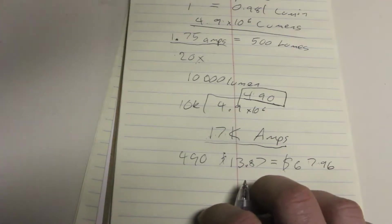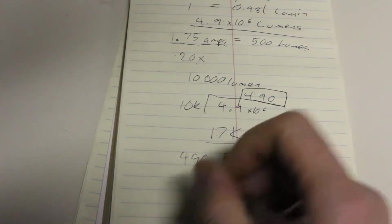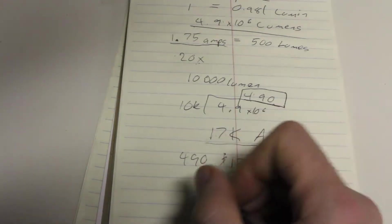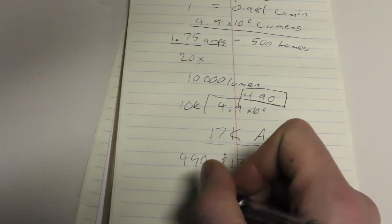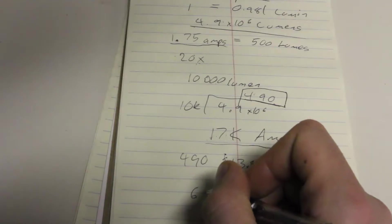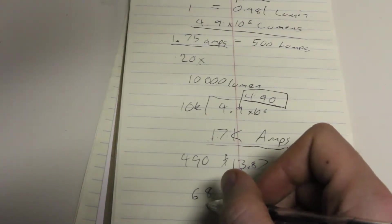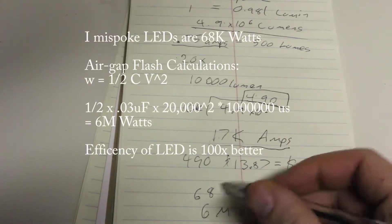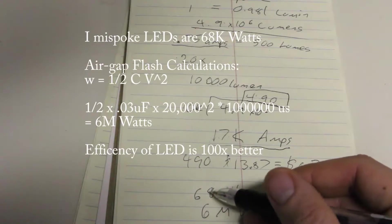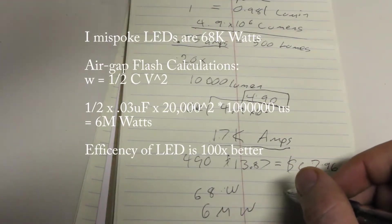There is an advantage to the LED flash, though. If you take the number of amps and you multiply by the four volts needed per LED, you come up with about 68 watts. Now, that compares to the six million watts for the air gap flash, so you're talking about something that's approximately a hundred times more efficient, which is a little surprising to me.